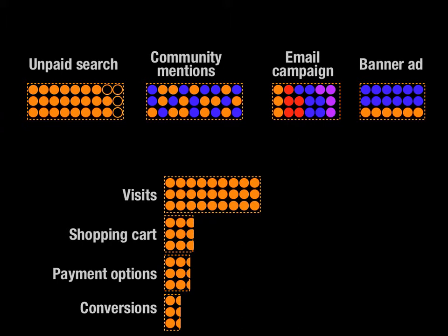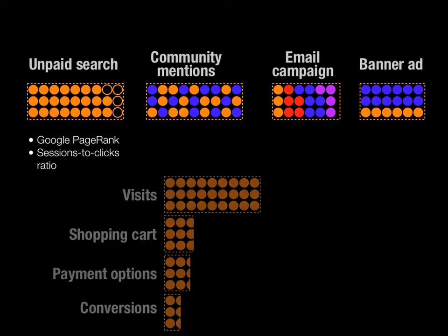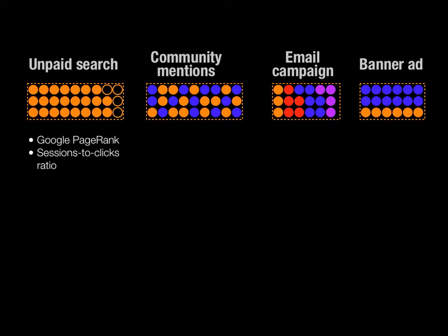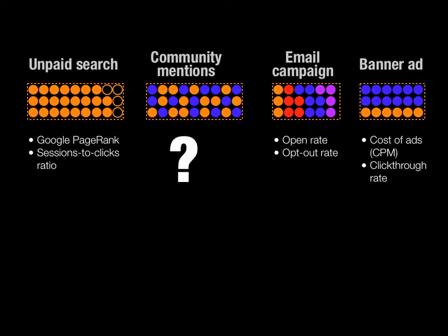The question here is, what should we track for communities? Because when we're talking about unpaid search, for example, we care about factors like your Google PageRank, or the percentage of people who click on a link and actually make it to your site. If you're doing banner advertising, you care about the cost of those ads and the percentage of people who click on them. If you're doing email, you care about open rate, opt-out rate, and so on. But it's still unclear what metrics and KPIs we should look at for communities, so we're going to take a stab at answering some of those questions.